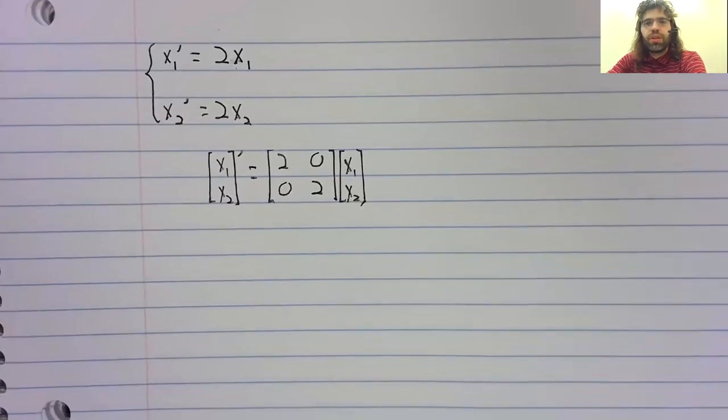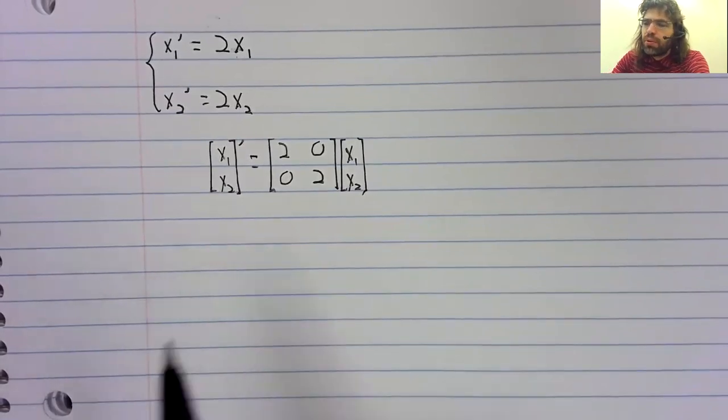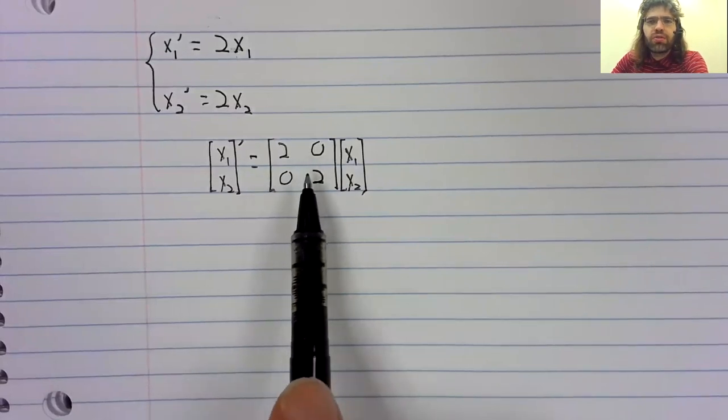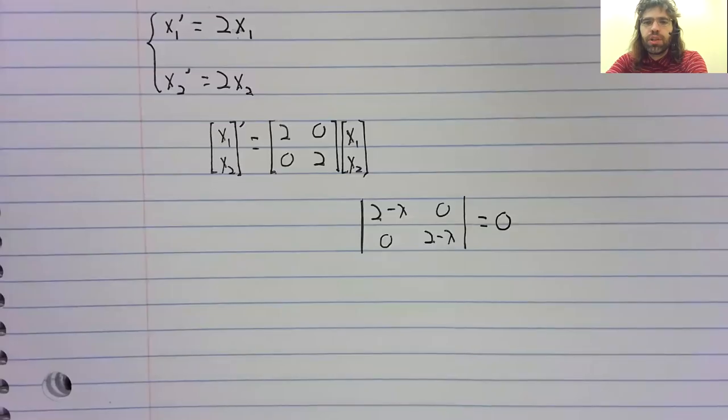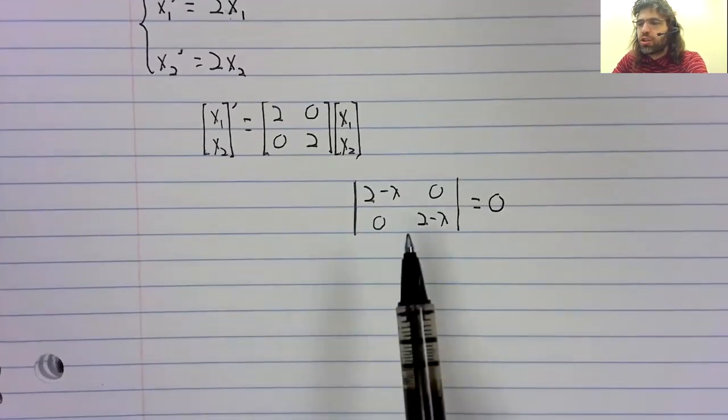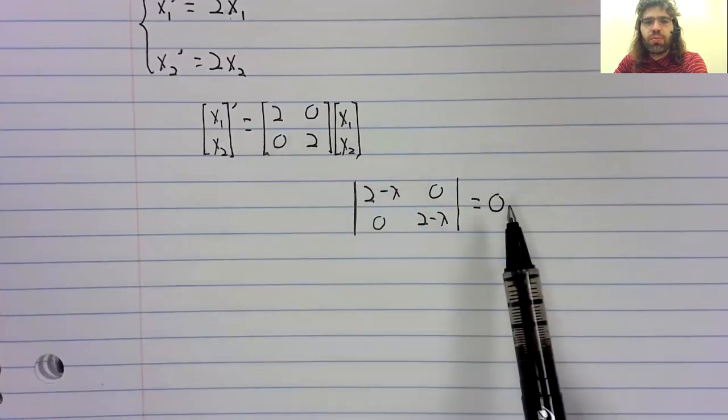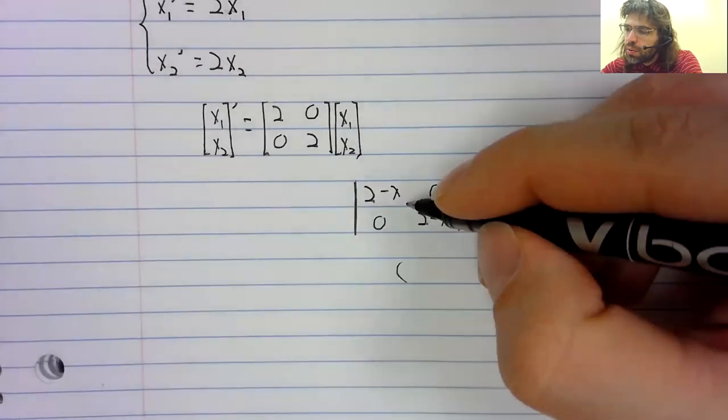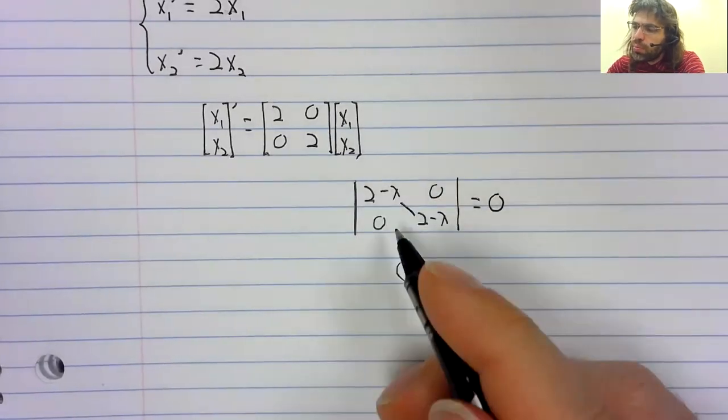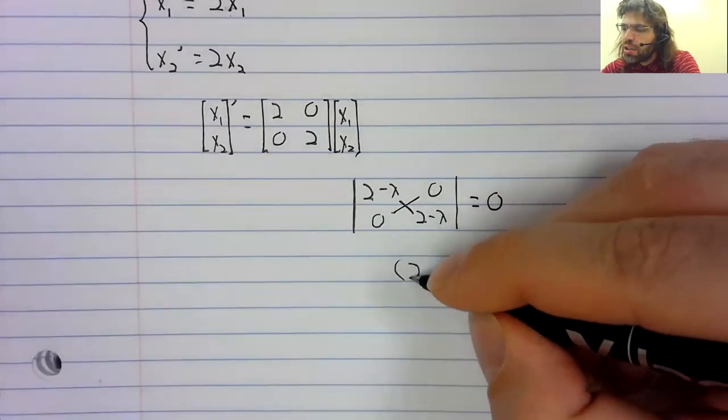We will rewrite this in terms of matrices. We will find the eigenvalues of this matrix. We do that by setting the determinant of this matrix minus lambda equal to zero. For a two-by-two matrix, the determinant is easy to find.